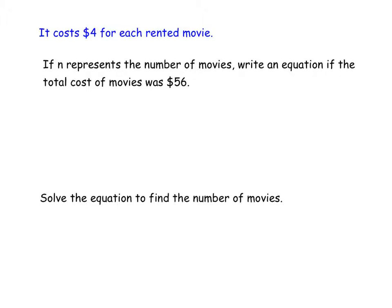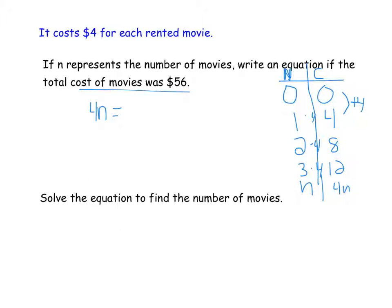All right, another type of problem. It costs $4 for each rented movie. If n represents the number of movies, write an equation if the total cost was $56. So think about this. If we rented 0 movies, we would pay 0. But for every movie that we rented, the cost went up 4. So if we rented 2 movies, it would be 8. And 3 movies would be 12. So the rate of each movie is $4. So we can take our 4 times the number of movies, because in each case, we had to multiply by 4 to get our cost. So 4n equals the total cost of 56.